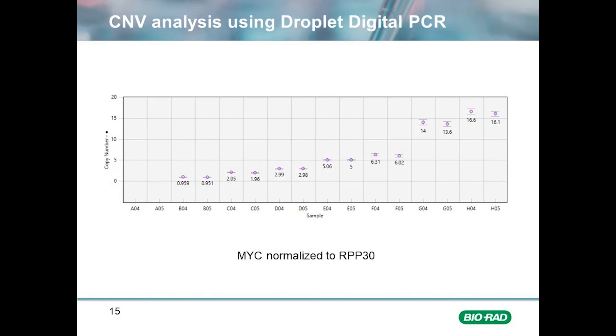As you can see from these examples, copy number variation analysis using Droplet Digital PCR is easy, straightforward, and extremely powerful.